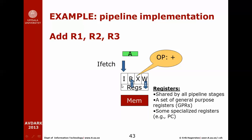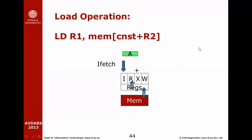Once more, these registers are all shared and defined by the architecture — they represent the CPU state shared by all pipeline stages. There is one special register: the program counter, which points to the next instruction to be executed. A load instruction loads from the address identified by the value in register 2 plus some immediate constant encoded in the instruction — that address identifies the piece of memory we're going to load data from.